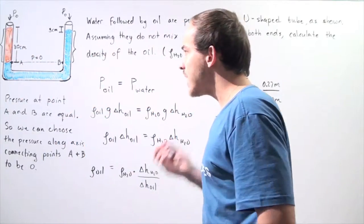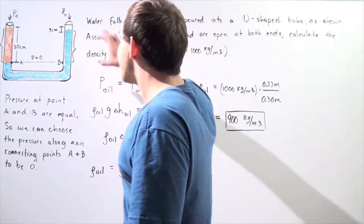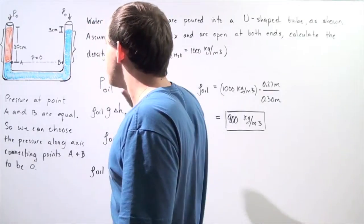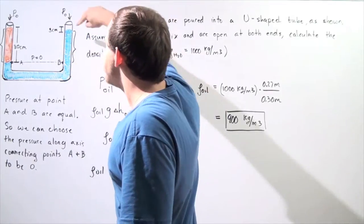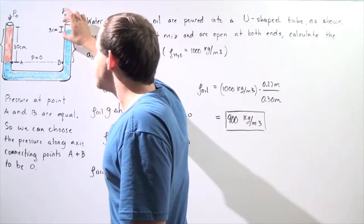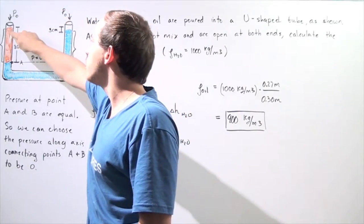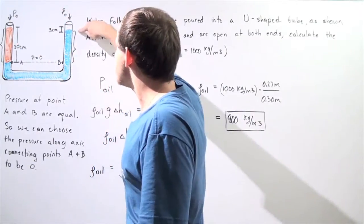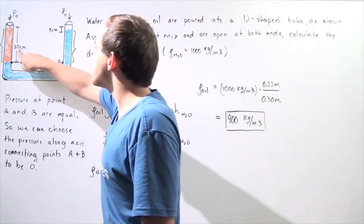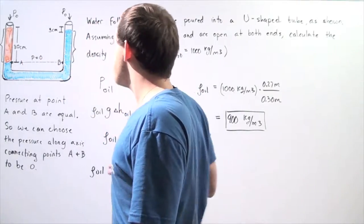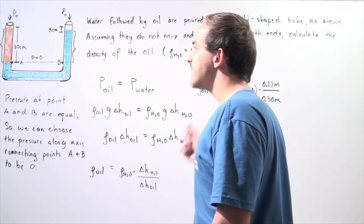This height of water begins at point B and ends at a point which is 3 centimeters below the point of the oil. So that means this entire section is 30 minus 3 centimeters, so 27 centimeters.